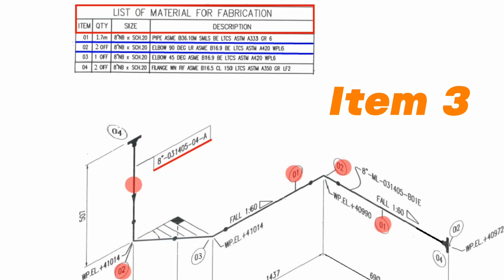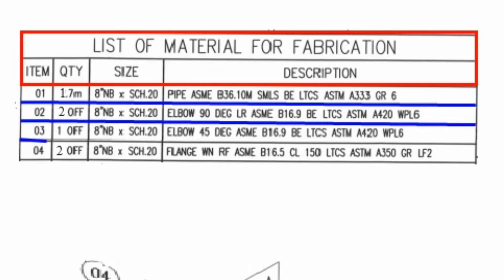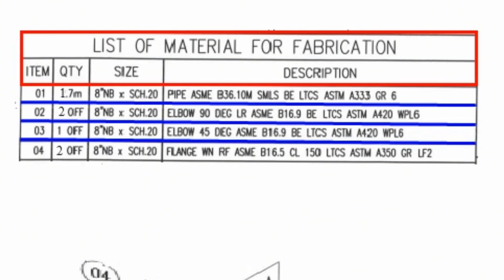Item number 3 is shown in one place of this pipeline drawing. Item number 3: quantity 1-off, size 8-inch, schedule 20, elbow 45-degree, ASME B16.9, low-temperature carbon steel materials, ASTM A420.